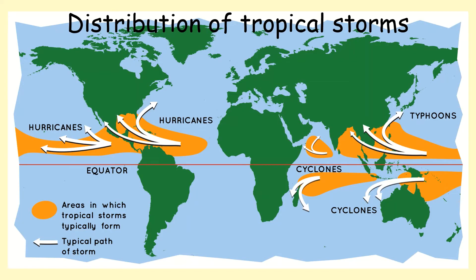Let's start with the distribution of tropical storms. Tropical storms blow to the west because of the spin of the earth, and then they veer off to the south in the southern hemisphere or to the north in the northern hemisphere. We call these tropical storms hurricanes if they're found in the eastern Pacific and in the Atlantic Ocean around America. They're called cyclones if they're in the Indian Ocean, and they're called typhoons if they're in the western Pacific.